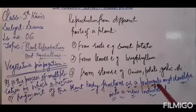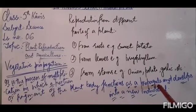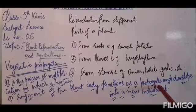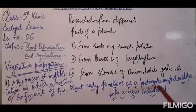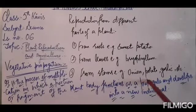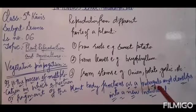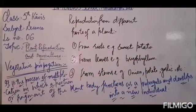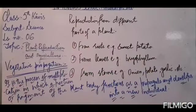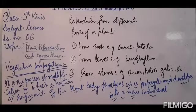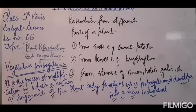A propagule is a vegetative structure that gives rise to a new individual. It may be a bud, it may be a tuber, or it may be a bulb — I will explain these later. So in vegetative propagation, a portion or fragment of the plant body functions as a propagule — that may be a root, a stem, or a leaf — and gives rise to a new plant.